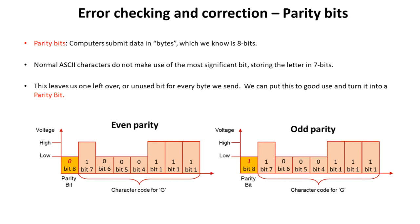First of all, parity bits. Computers submit data in bytes, which we know is eight bits. Normally ASCII characters do not make use of the most significant bit, storing the letter in only seven bits. This leaves us one leftover bit which is unused and which we send with every single byte. We can put this to good use — we use what's called a parity bit.